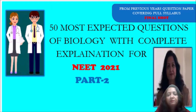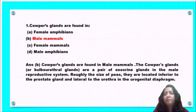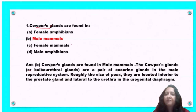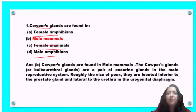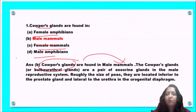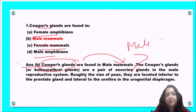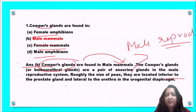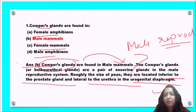The first question: Cowper's glands are found in female amphibians, male mammals, female mammals, or male amphibians? We know that Cowper's glands are found in male mammals and are also known as bulbourethral glands. These are exocrine glands found in the male reproductive system, located inferior to the prostate gland and lateral to the urethra in the urogenital diaphragm. So option B is the correct answer.